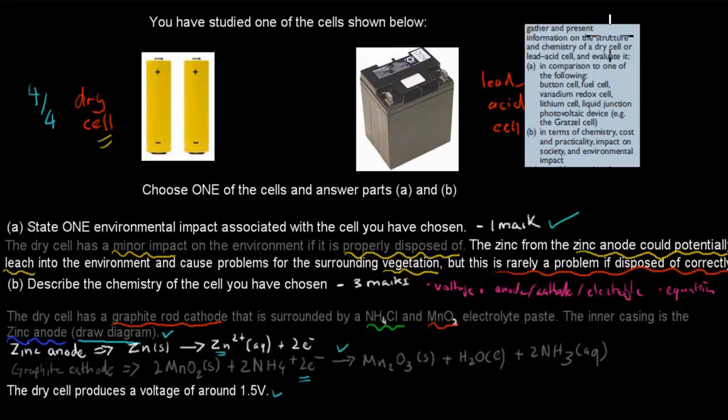And where this has come from, this question, this dot point here. Gather information, present, and compare. So we have to have either the dry cell or lead-acid cell, which is why it gives us a choice. We can choose one of the dry cell or lead-acid cell. And this says compare to one of the following. But this is actually, in this question, it's not asking us to compare it. It's not asking us to look at the cost or practicality, the impact on society, and the environmental impact. All it's asking us to do is this part. The chemistry. So we looked at the chemistry for the dry cell. It's actually probably one of the easier ones for this dot point. And the next question, question five for the electrochemistry chapter, covers a seven mark question, which is all of this together. But this one is just four out of four, and all you have to do is choose one, which is in this case the dry cell, and go for the chemistry. And, oh yeah, and the environmental impact as well.